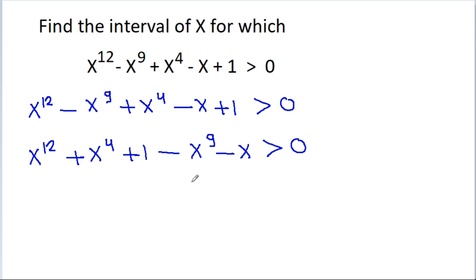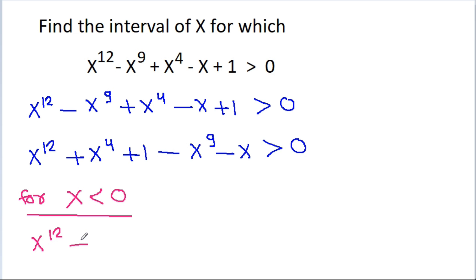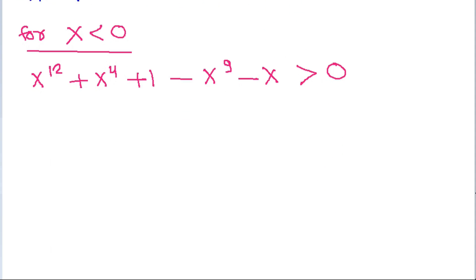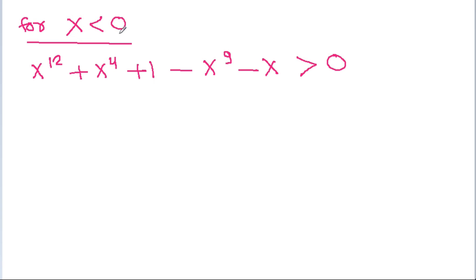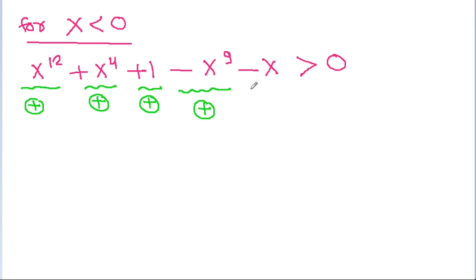If we check for negative x, that is x less than 0, we have x power 12 plus x power 4 plus 1 minus x power 9 minus x is greater than 0. For x less than 0, x power 12 is always positive, x power 4 is also positive, and 1 is also positive. Since x is negative, minus x power 9 will be positive and minus x is also positive. So for x less than 0, we get all terms positive.